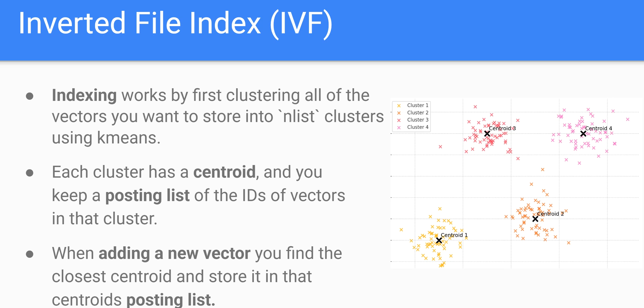You can think of this as managing a hash map under the hood, where the keys are the centroids and each key maps to a list of vectors. Those vectors are in the same cluster or group as that centroid, and vectors in the same group are similar. So if any new query vector is similar to a centroid, it must share similarities to all the vectors in that centroid's group.